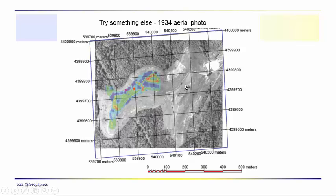Not deterred by our sophisticated approach with terrain conductivity, we decided to look at some old aerial photography. Looking at a black-and-white 1934 aerial photo, we did find something that looked very much like a well pad with a well located on it. We told the owner — who has a house nearby — and he didn't seem too concerned. Today this is apparently a garden area, and to our knowledge CO2 never made its way to the surface there.